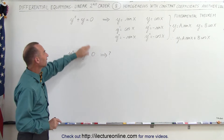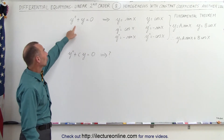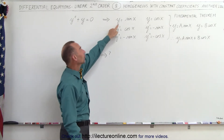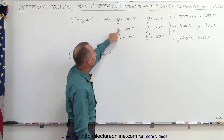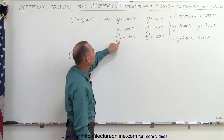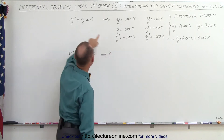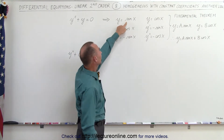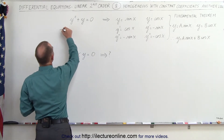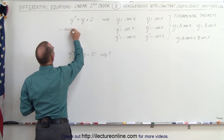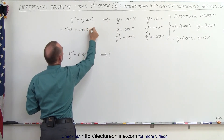Let's go back to what we know so far. We've already discovered that the general solution can be y equals sine of x, because if we take the first derivative we get cosine of x, and the second derivative gives us minus sine of x. Plugging in minus sine of x for y double prime and sine of x for y, we get minus sine of x plus sine of x, which equals zero.